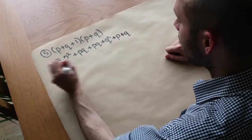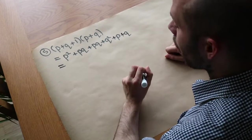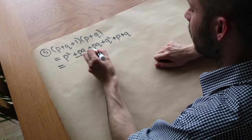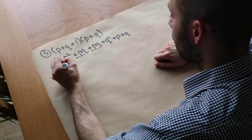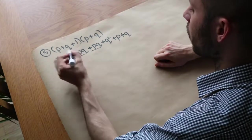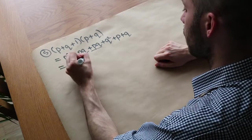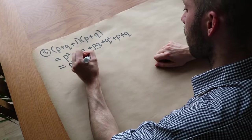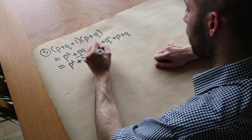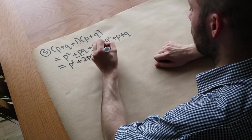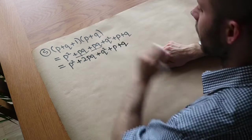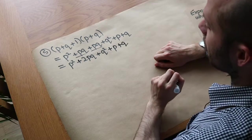Does anything collect here? The only like terms are the pq terms, so we collect those together: that's plus 2pq. Nothing else is a like term because they're all different combinations of variables. So the result is p squared plus 2pq plus q squared plus p plus q.